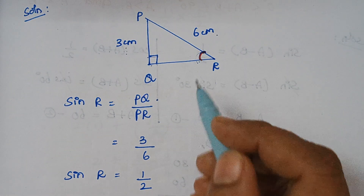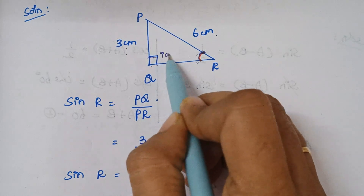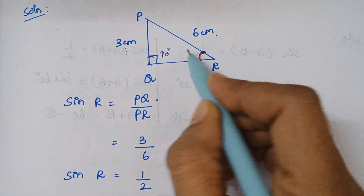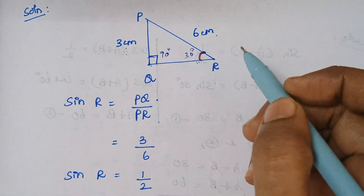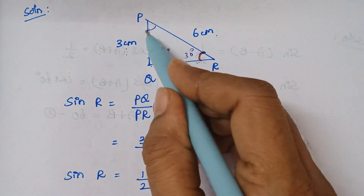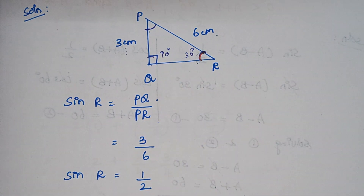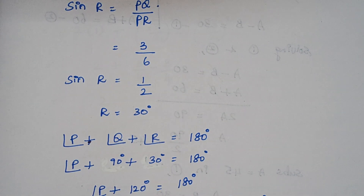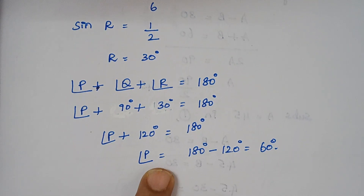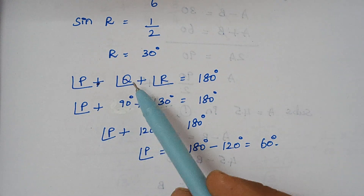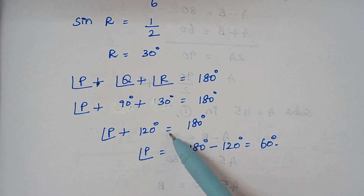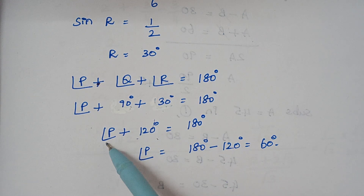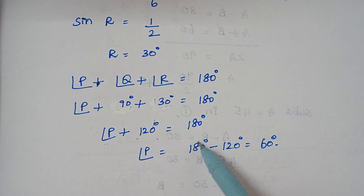We know angle Q is 90° and angle R is 30°. Using the angle sum property: angle P + angle Q + angle R = 180°. Substituting: P + 90 + 30 = 180, so P + 120 = 180. Therefore angle P = 180 − 120 = 60 degrees.